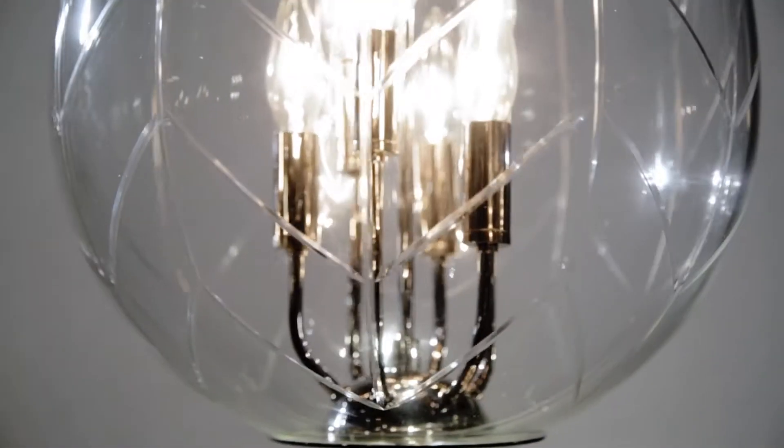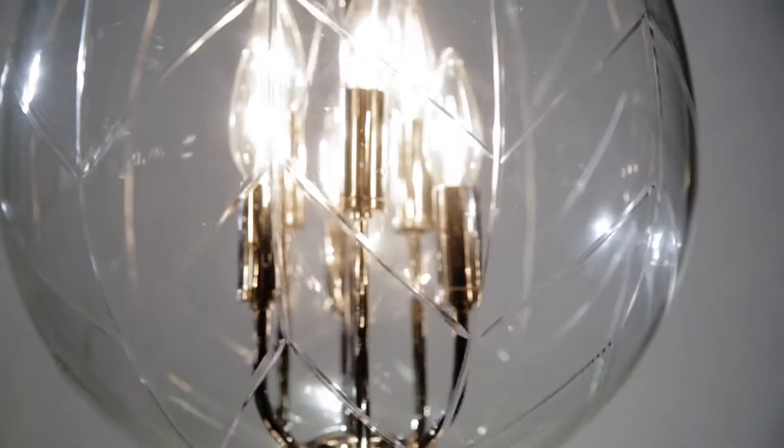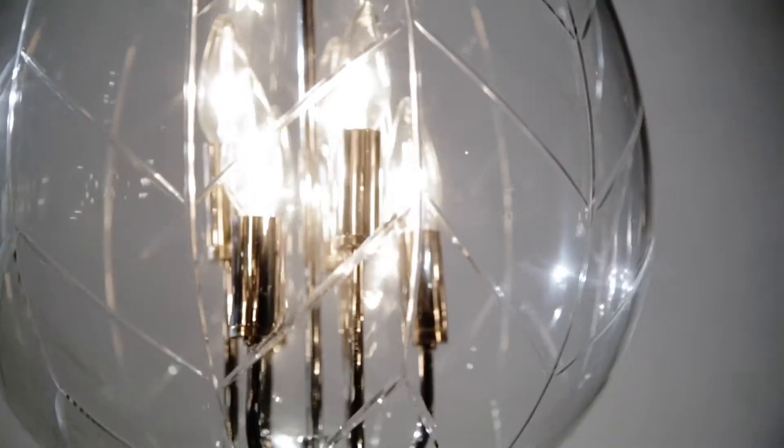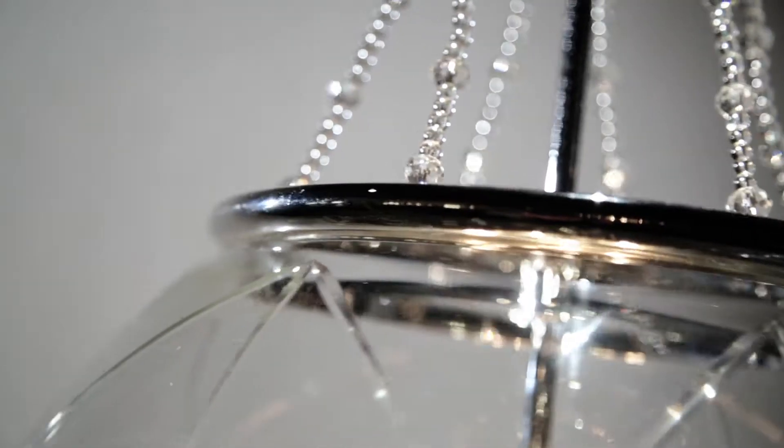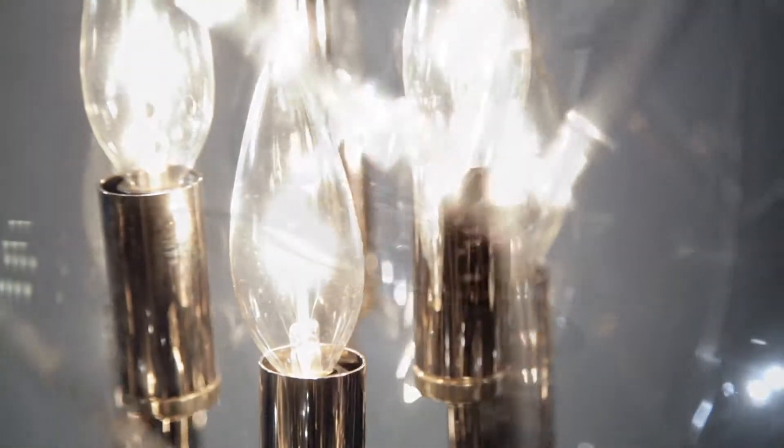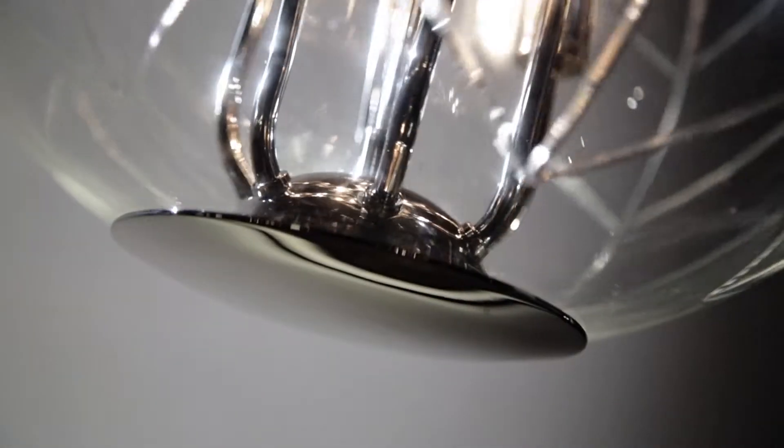Using a Venetian technique, a hand-cut chevron pattern is inscribed on a glass globe with gleaming brass trim on the top and bottom. The globe surrounds candelabra bulbs perched on a brass dome at the base.